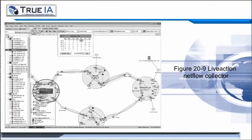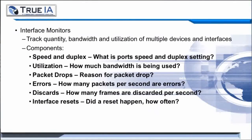Here's an example of one such collector called LiveAction. To capture NetFlow data, it requires interface monitors. The basic components include the speed and duplex of the interface, the utilization or bandwidth used by that interface, any dropped packets or errors that have occurred across the interface, how many discarded frames it has encountered — rated per second — and how many times the interface has been reset.